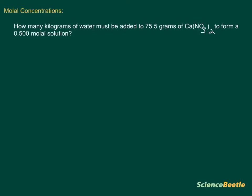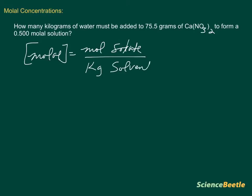Molal concentrations involve the number of moles of a solute divided by the kilograms of a solvent, and the formula is as follows. Molal concentration equals the number of moles of the solute divided by the kilograms of the solvent.